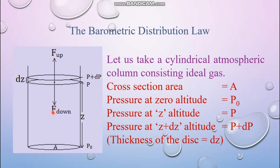This cylindrical column has cross-section area A. The pressure at altitude zero (ground level) is P₀. At height z, the pressure becomes P. If we take a thin disc of thickness dz, then at the upper part of this disc the pressure becomes P + dP. So the pressure difference between these two points is dP, and the difference in altitude is dz.